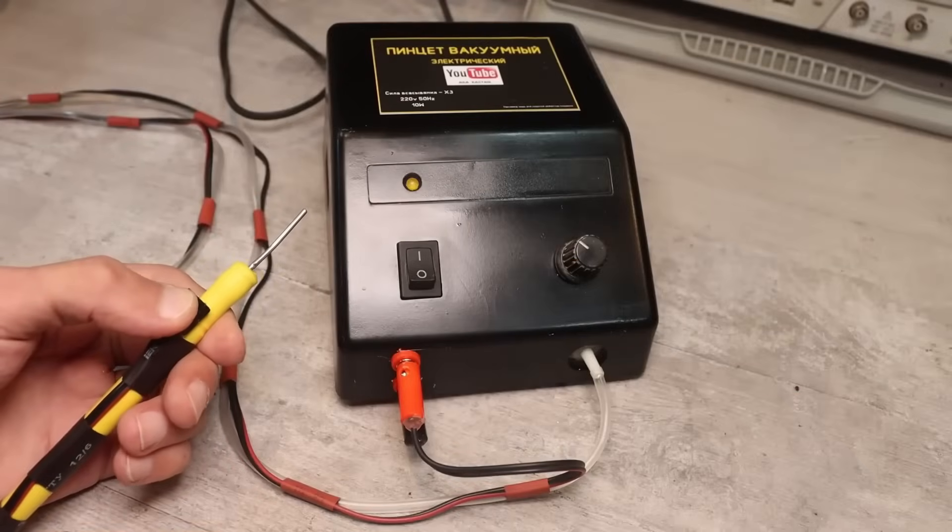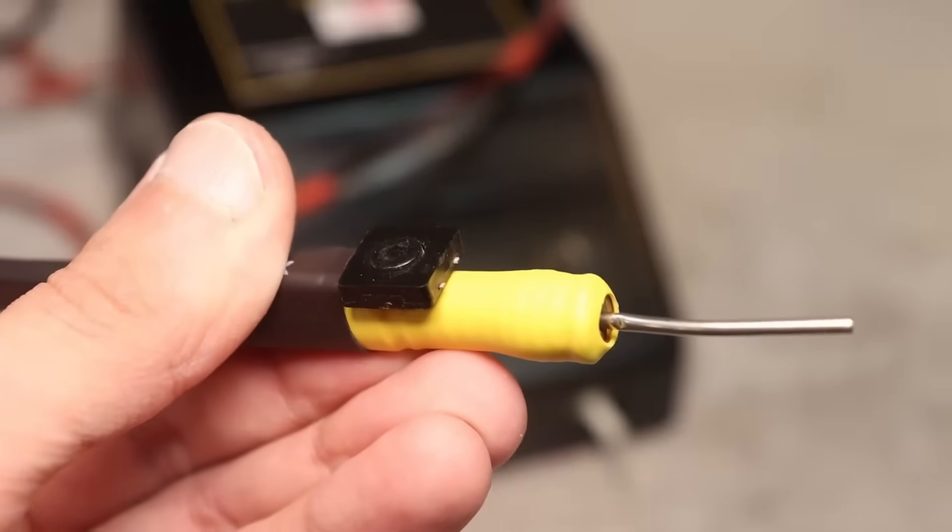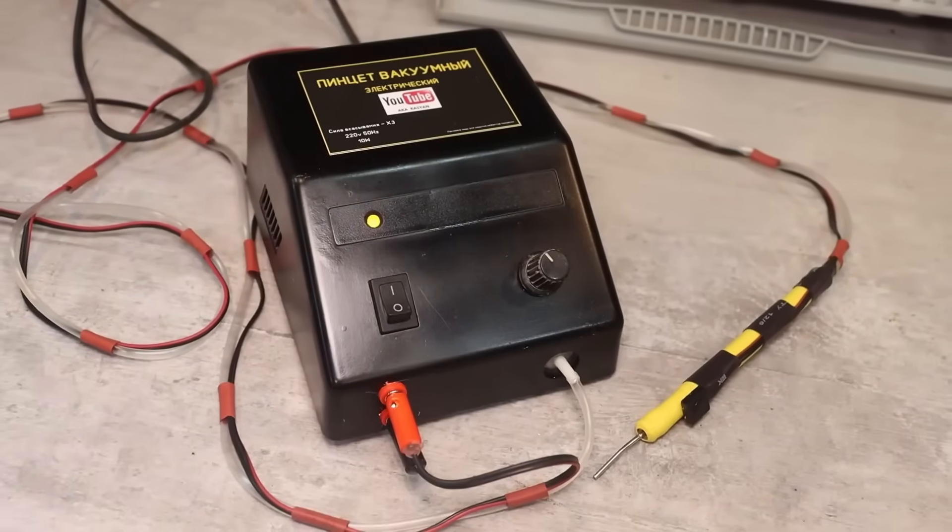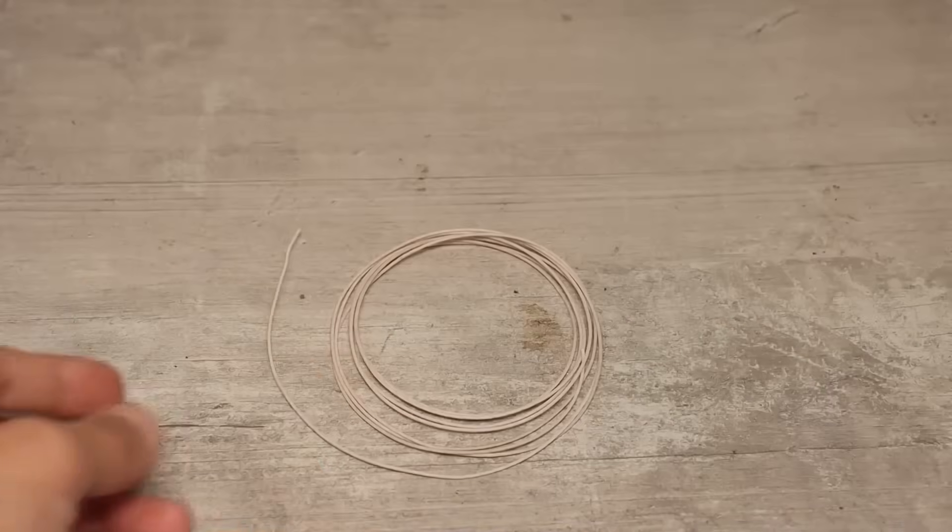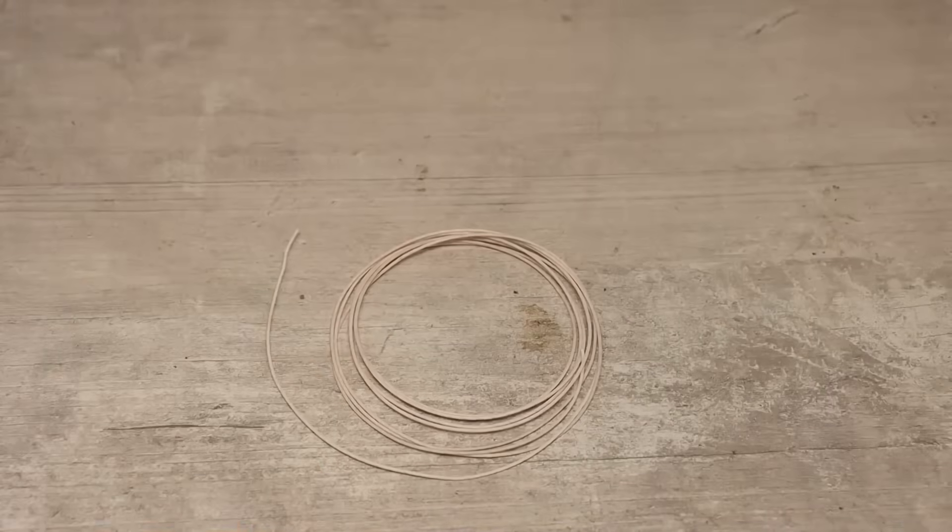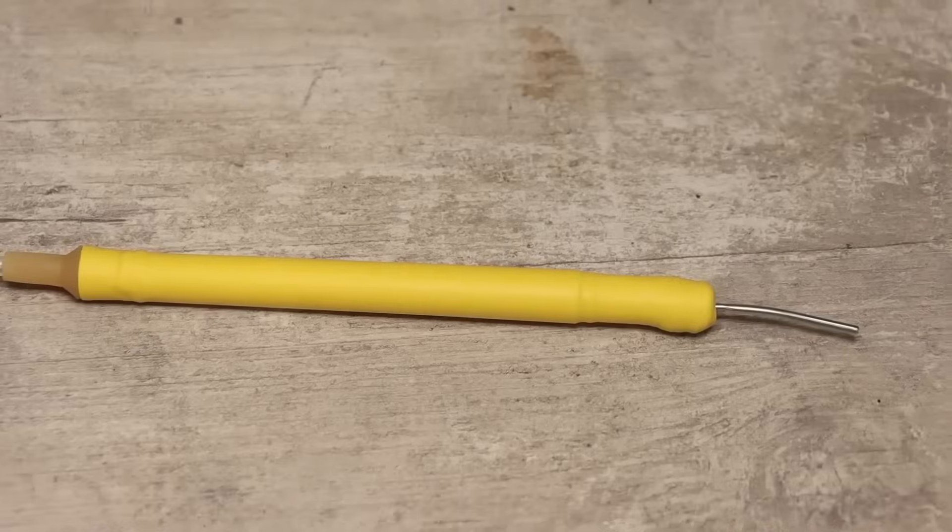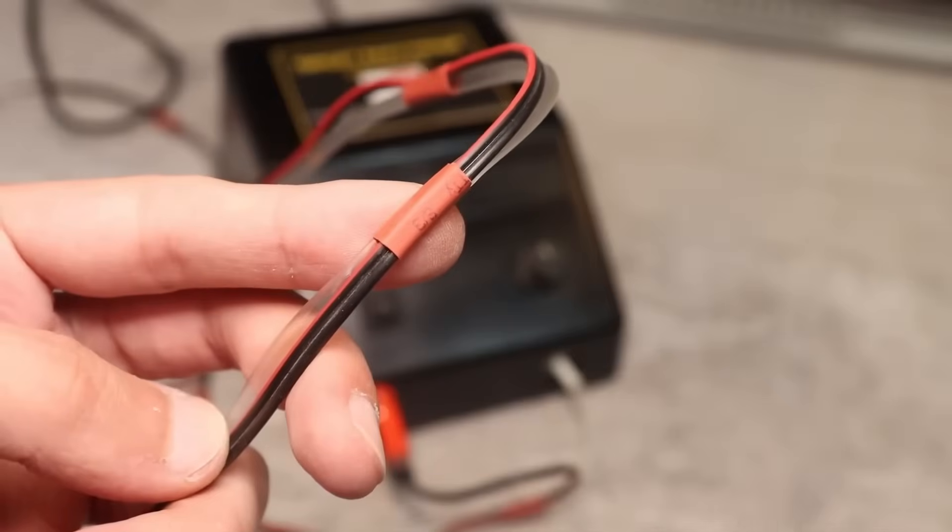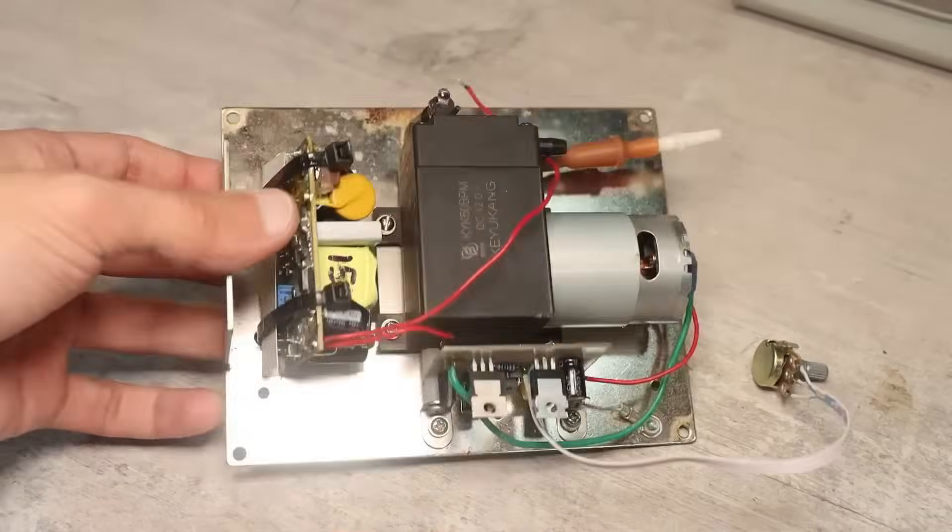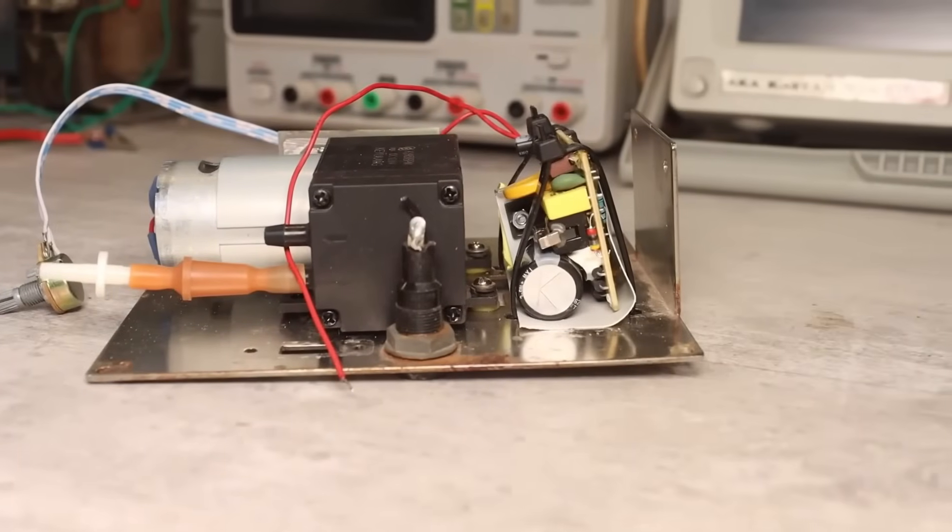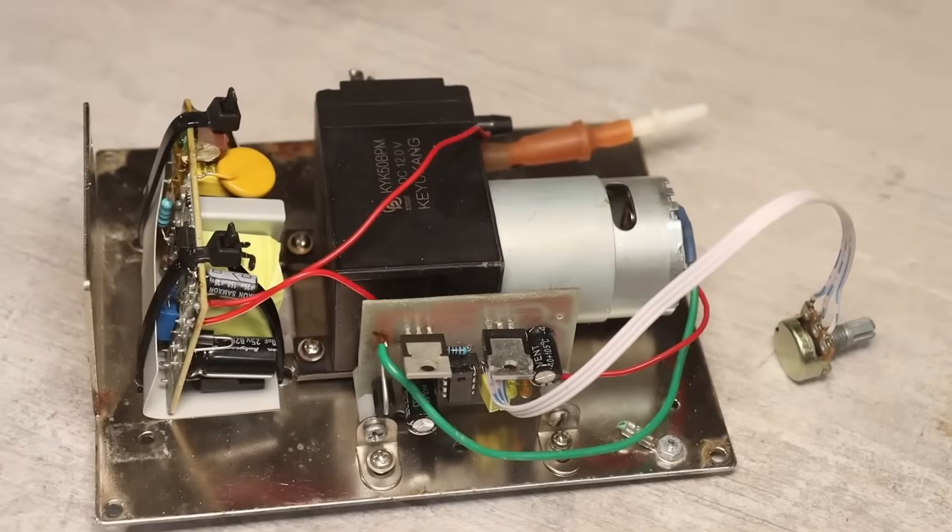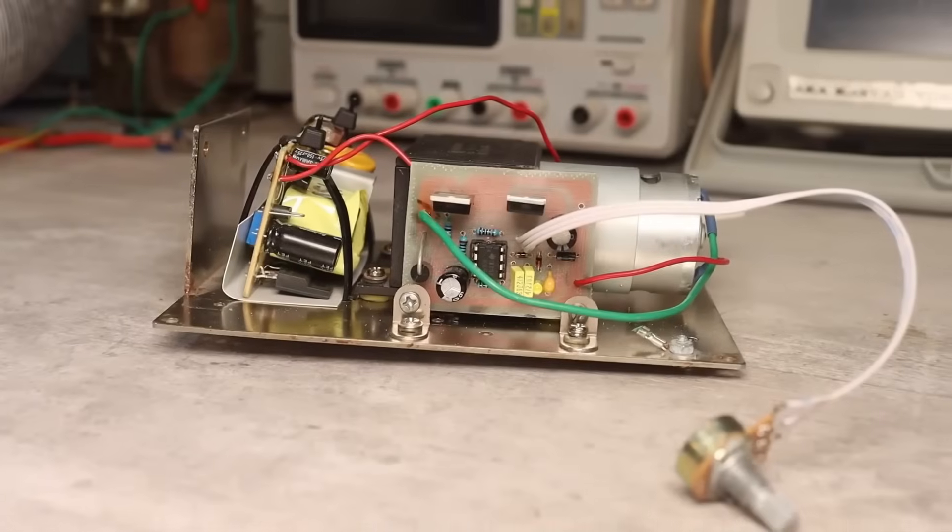The button on the handle simply supplies power from the source to the PWM controller. That is, if it is released, the PWM controller and the motor are completely de-energized. The wire itself needs to be flexible and elastic. MGTF is perfect for such purposes, but I ran out of it, so I used what I had. I put heat shrink on the handle for aesthetics. The same heat shrink is used to secure the wire. The power source is secured inside the case with zip ties. An insulator is placed underneath it to prevent short circuits. The PWM controller is attached to the chassis using metal brackets.